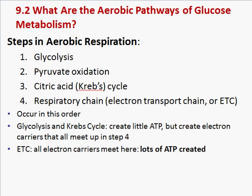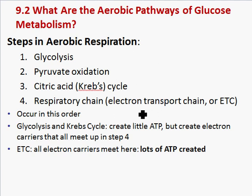Here are the steps we're going to go over today in aerobic respiration — aerobic because oxygen is required. The steps in order are: glycolysis, pyruvate oxidation, the citric acid cycle, then the respiratory chain or electron transport chain. They all go together in this order, so it's very important to remember.